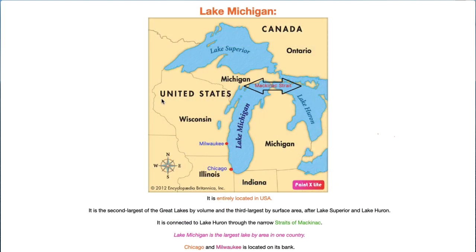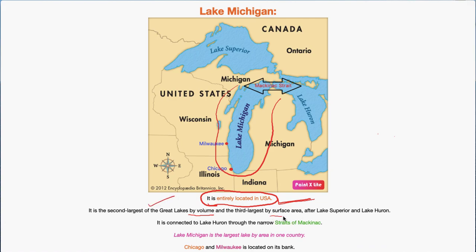The next lake is Lake Michigan. Lake Michigan is the only one of the Five Great Lakes located entirely within the USA — it does not form a Canada-USA border. Here you can see Lake Michigan and Lake Huron are connected by a small strait called the Mackinac Strait. This is very important from the prelims point of view — Mackinac Strait connects Lake Michigan and Lake Huron.